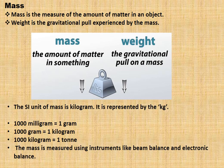Mass: Mass is a measure of amount of matter in an object. Weight is a gravitational pull experienced by mass. The picture shows you the difference between mass and weight. The SI unit of mass is kilogram, represented by kg. Thousand milligram equals one gram, thousand gram equals one kilogram, thousand kilogram equals one ton.